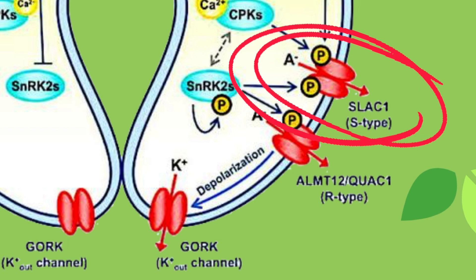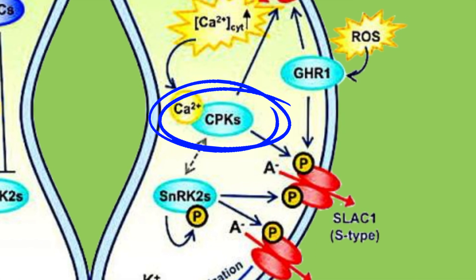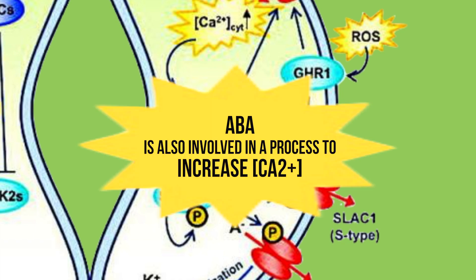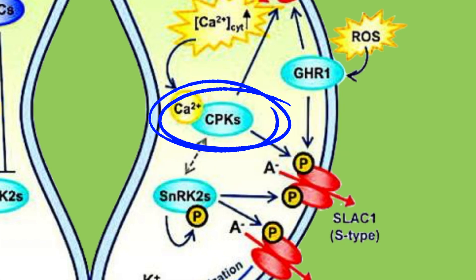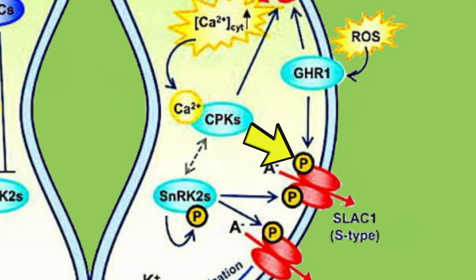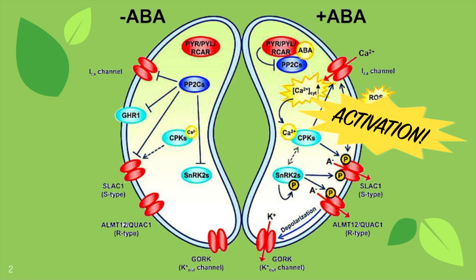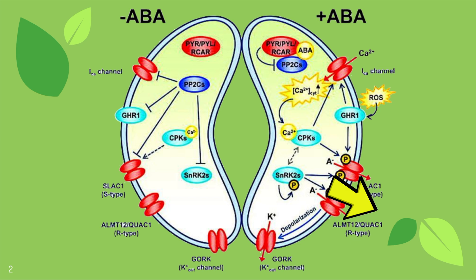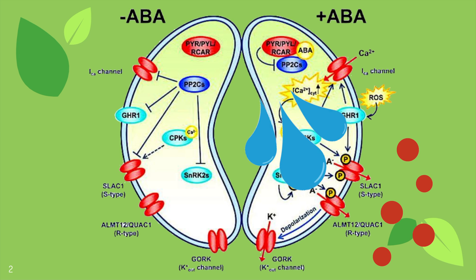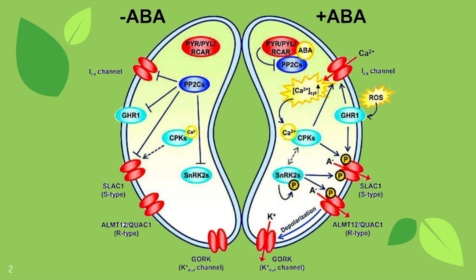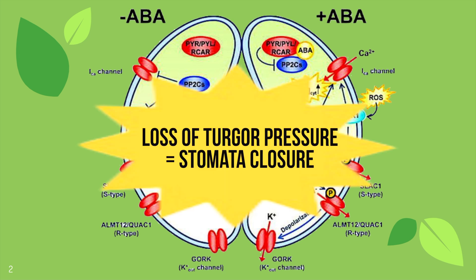However, SLAC1 also needs to be phosphorylated by the kinase CPK to be activated. For this to happen, ABA is also involved in a process to increase calcium concentrations to activate CPK to finally activate this transmembrane channel. The activation of these transmembrane channels allows anions to leave the stomata's guard cells and depolarization to occur for potassium to leave as well. We then have a high concentration of solutes outside the cell, allowing water to move down its concentration gradient and flow outside of the stomata's guard cell as well. This means that the guard cell has a loss of turgor pressure and the stomata closes.